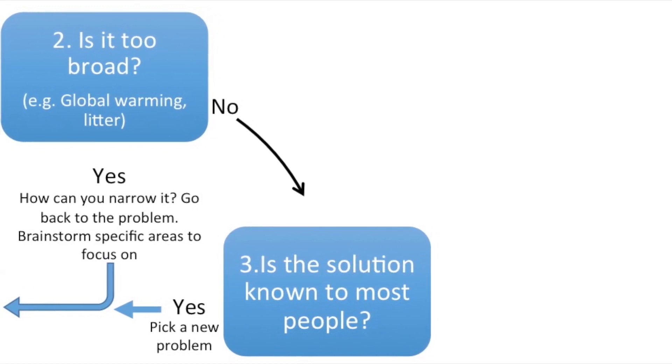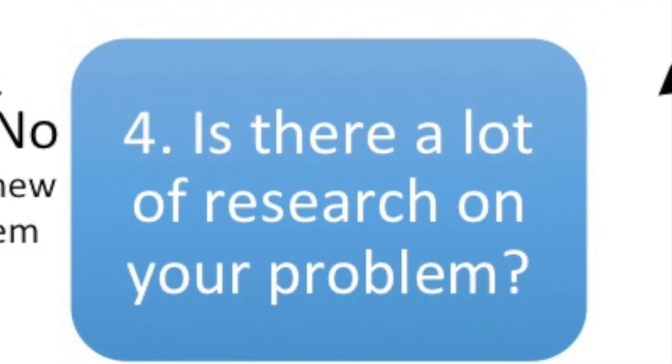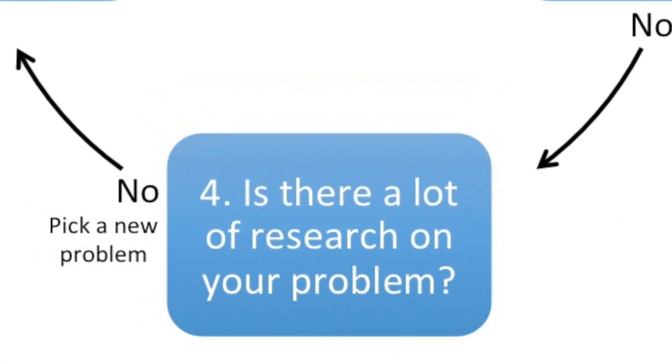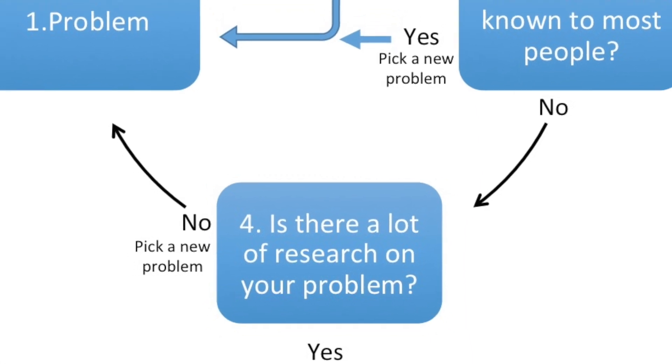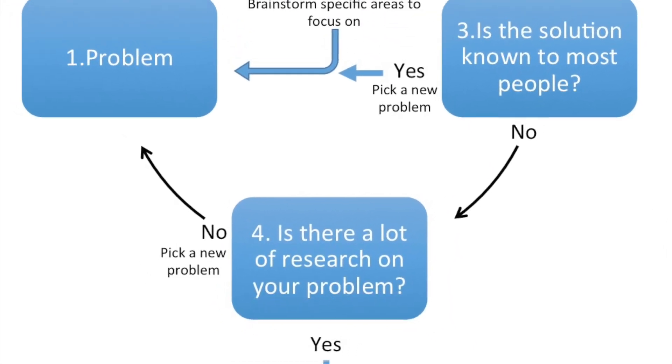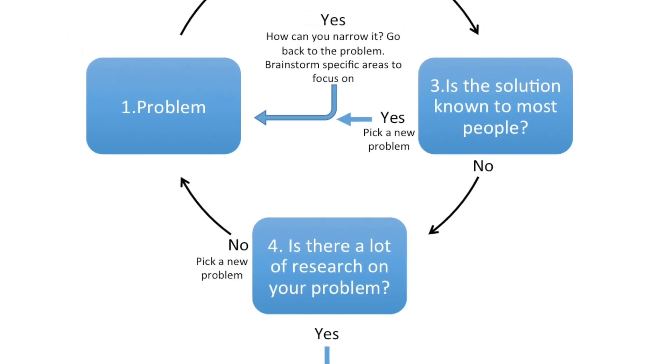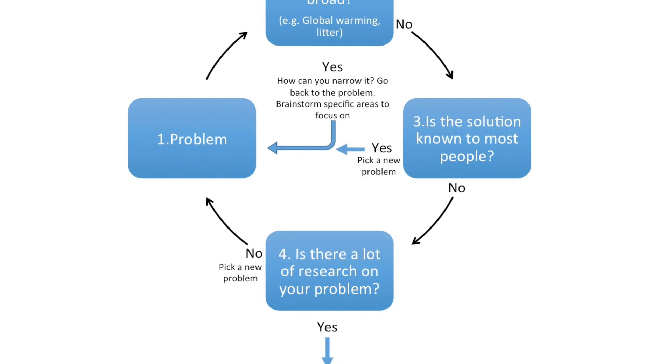The fourth step is to find out if there is enough research on your problem. If the answer is no, then you need to think of a new problem, as you have to research your solution and eventually find a source to back it up. Equally, if there's way too much information, you might want to narrow down your problem further or pick a new problem altogether and repeat the problem analysis cycle.